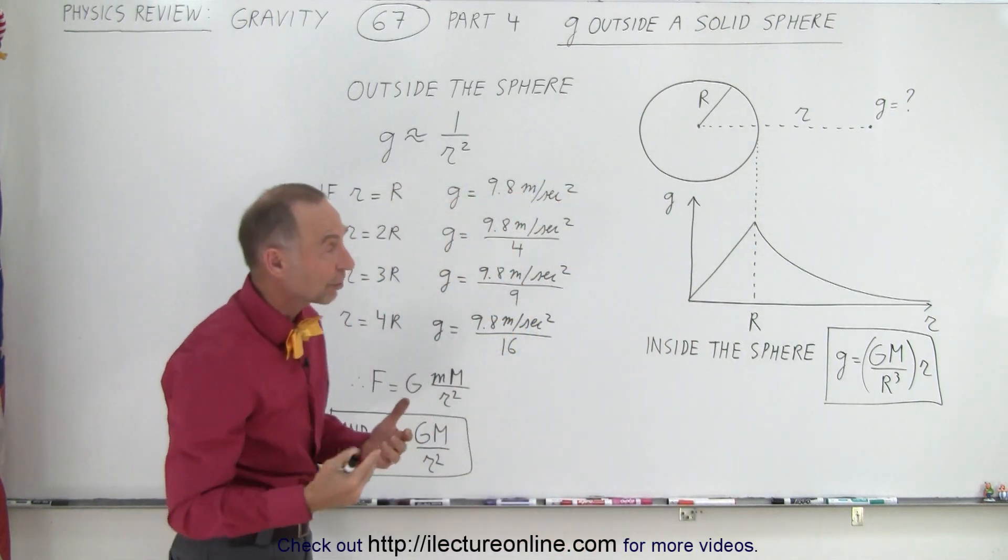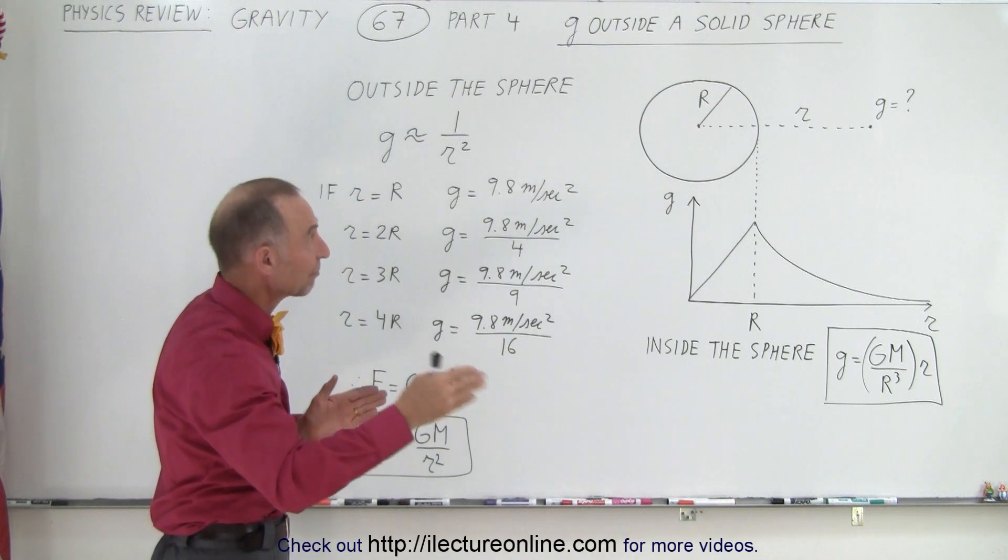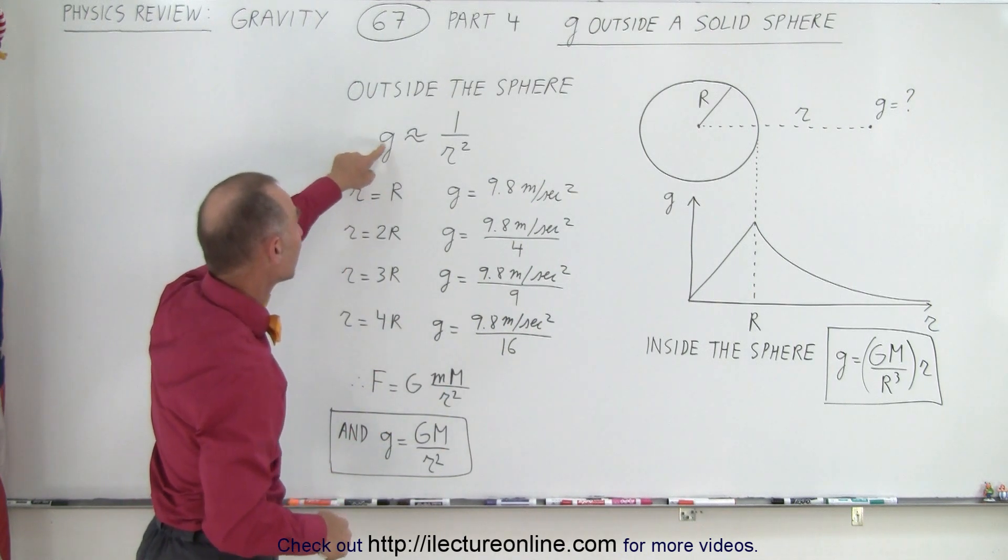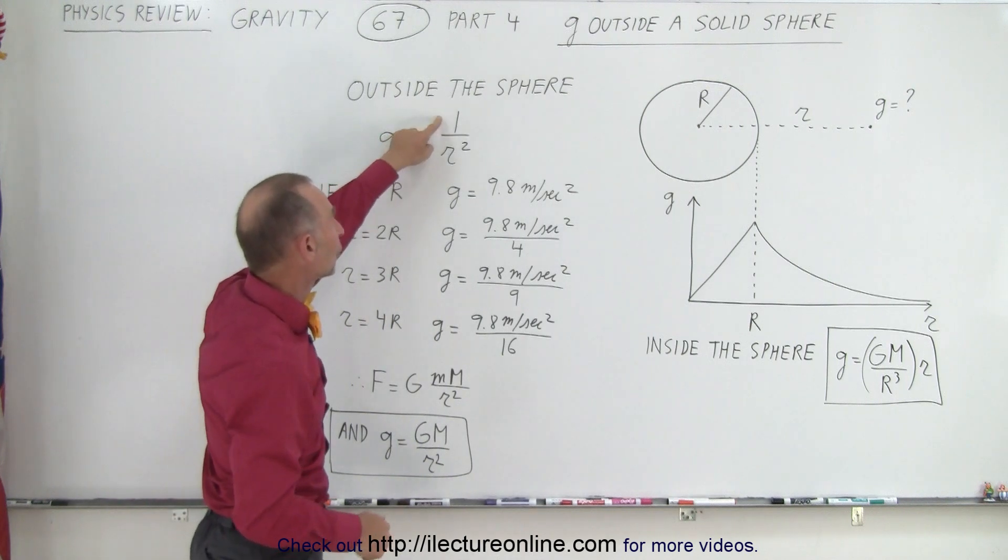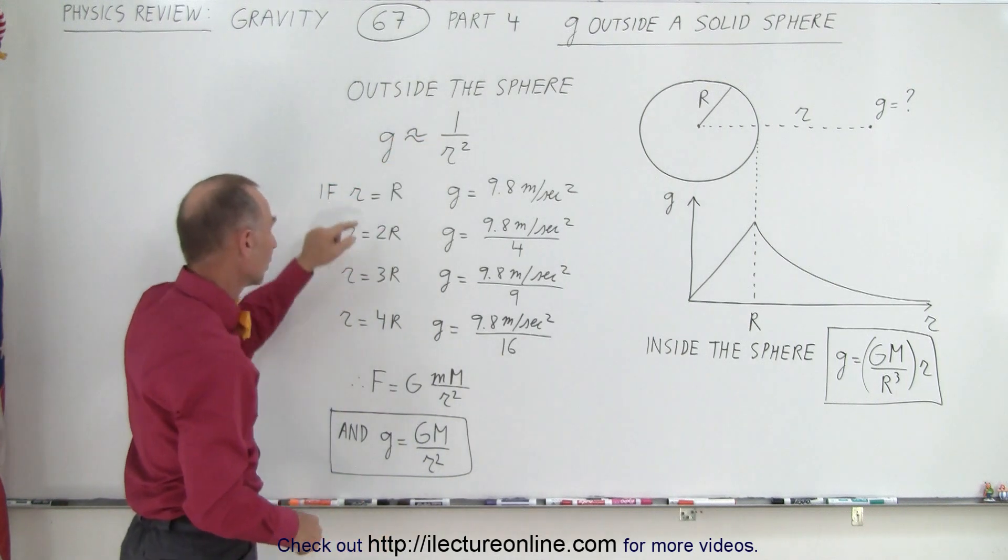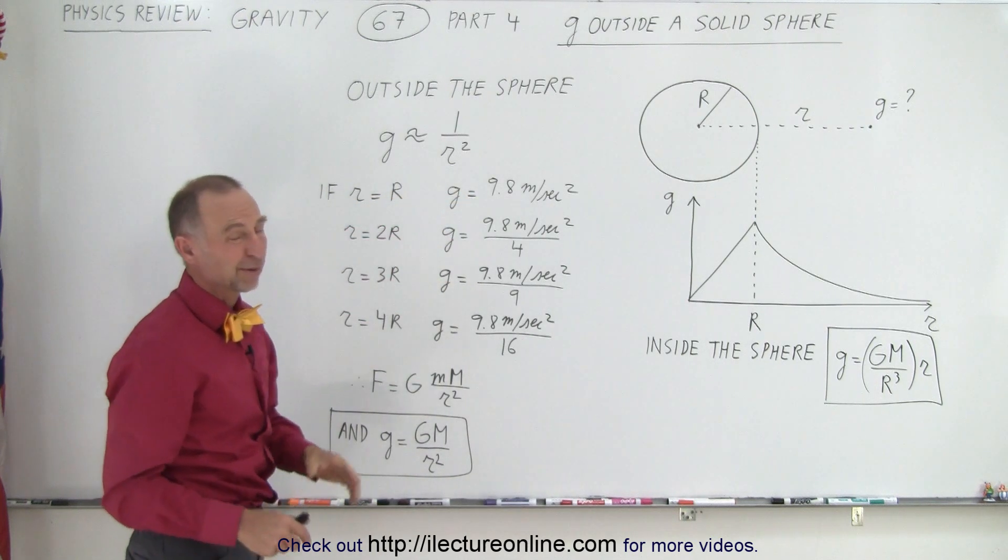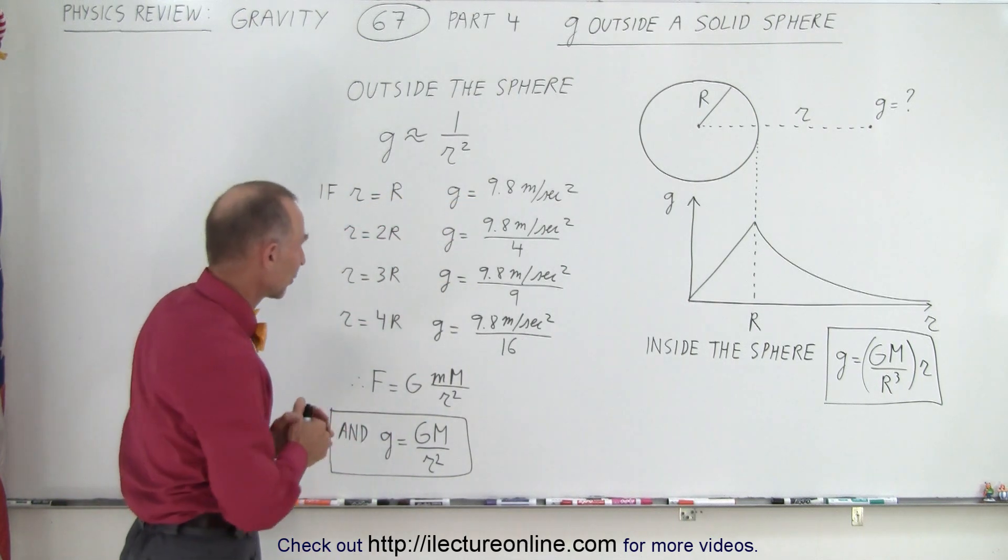But then once we're outside the surface and we continue to move away from the planet, then we can see that the acceleration due to gravity becomes proportional to 1 over the distance squared. So when you're at the surface of the object, then g will be 9.8 meters per second squared, of course, if the object is the Earth.